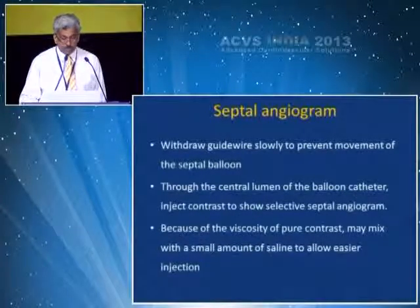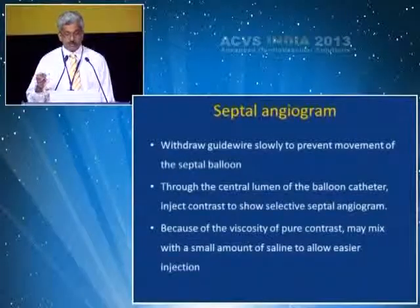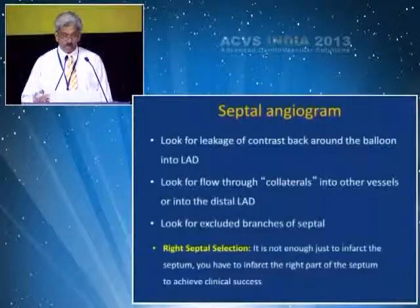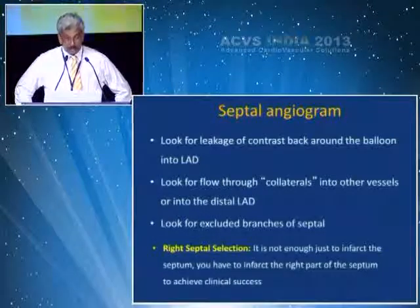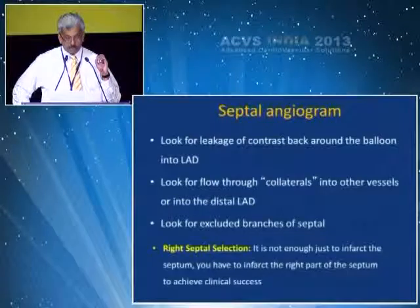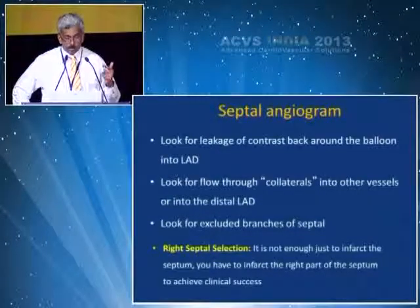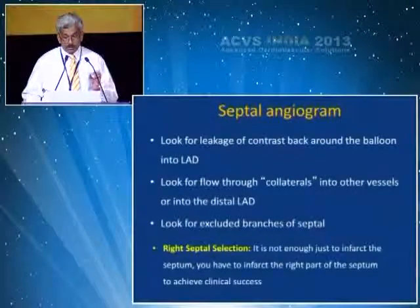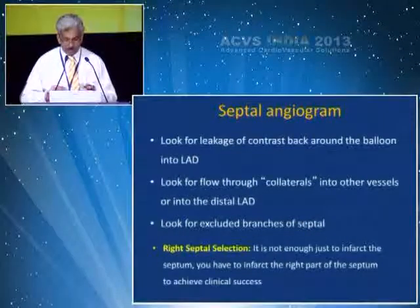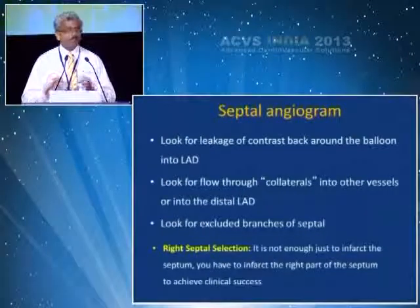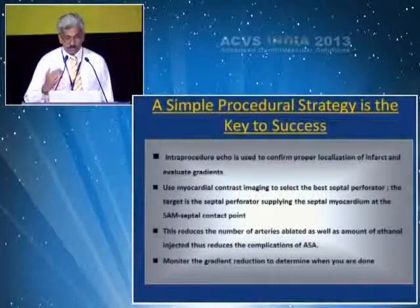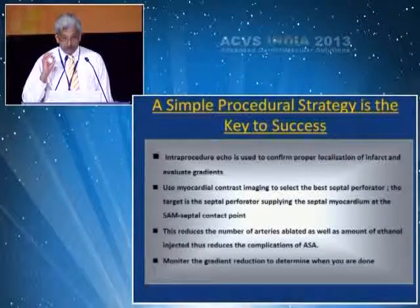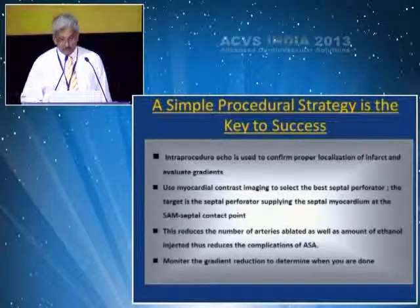Through the central lumen of the balloon catheter, inject contrast to obtain a selective septal angiogram; you may mix with a little saline for a good injection. The septal angiogram is important — look for the culprit septal artery, look for flow-through collaterals into other vessels or the distal LAD, and look for excluded branches of the septal. It is important to get the right septal artery to infarct the right portion of the septum. The key strategy is intra-procedure echo with myocardial contrast, examining the right septal artery and monitoring the gradient.